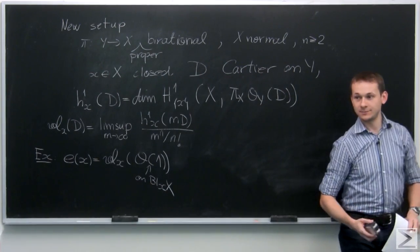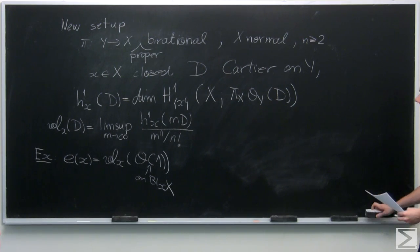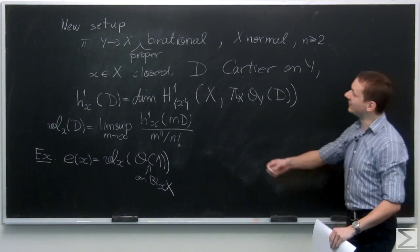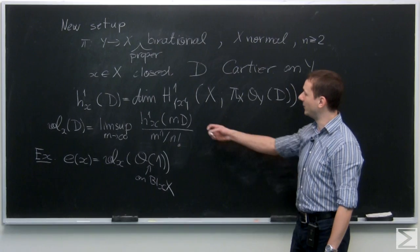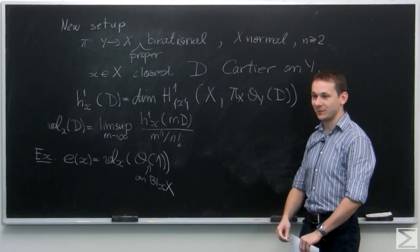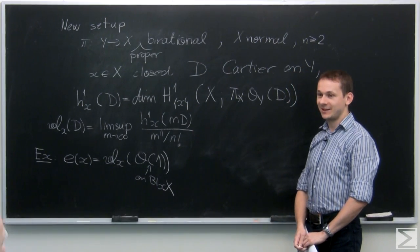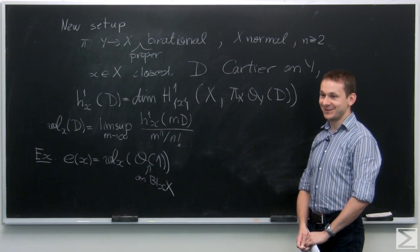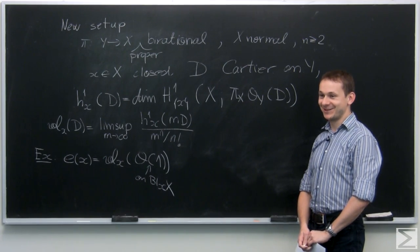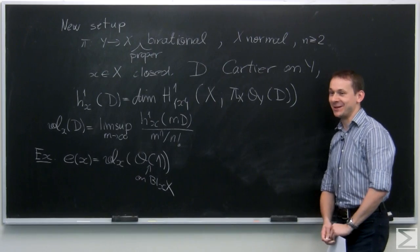Maybe one more question: why volume at x? The setup is over x — I'm looking at cohomology. So it would make total sense to call it a multiplicity. I had freedom, and I chose the name volume.